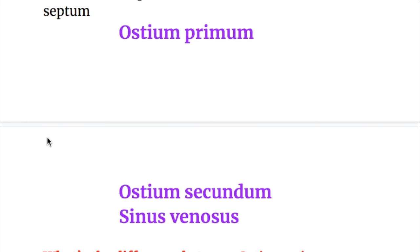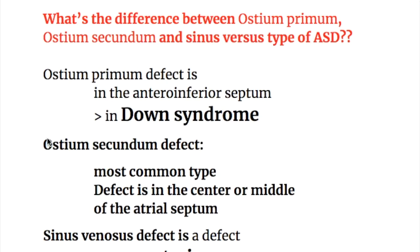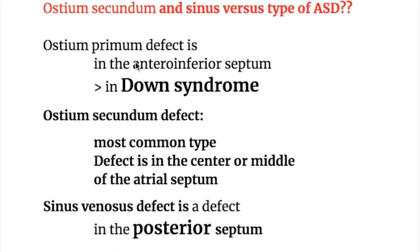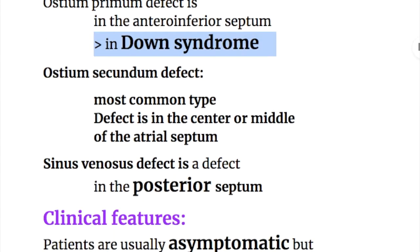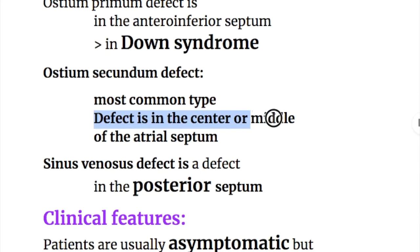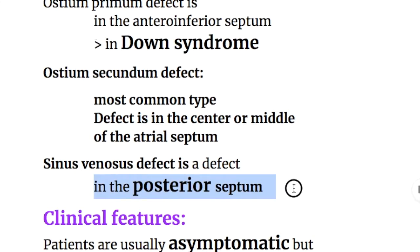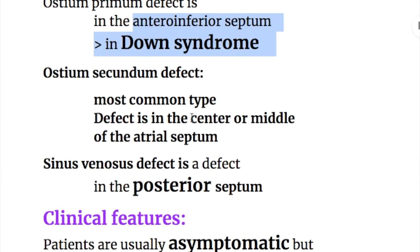There are three types of atrial septal defect: ostium primum, ostium secundum, and sinus venosus type. Ostium primum defect is in the anterior inferior septum and is more common in Down syndrome. Ostium secundum, the most common type, is a defect in the center or middle of the septum. The sinus venosus defect is in the posterior septum.